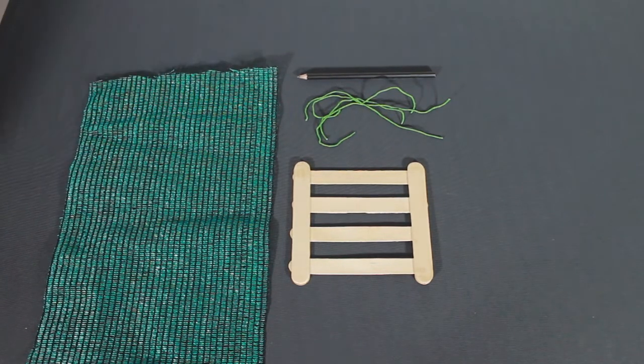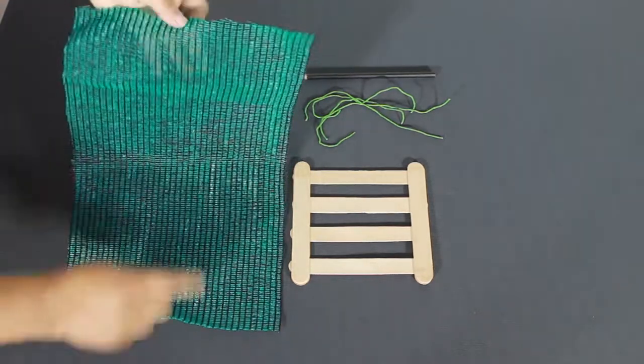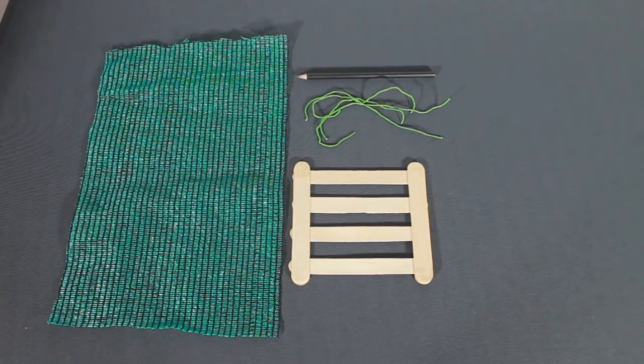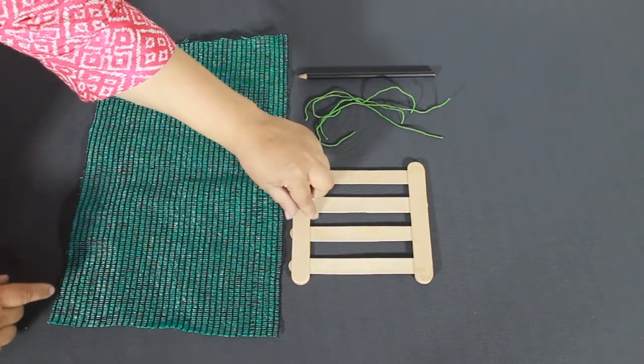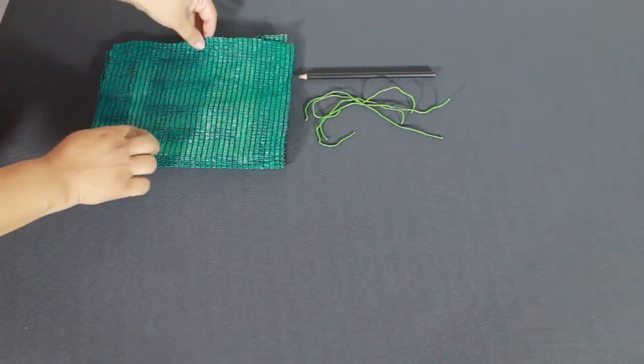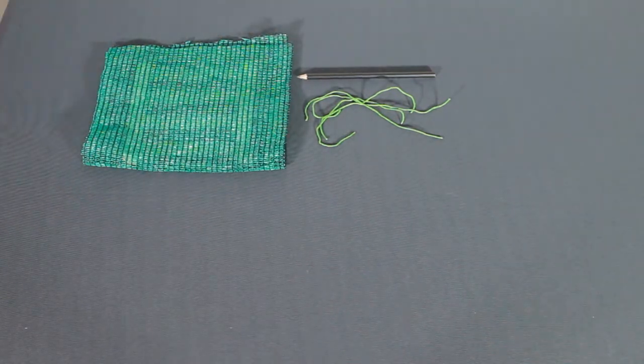It's time now to add the net. Place the frame on the net ensuring even space on all sides. Fold the net and cut extra net if any. Place the frame on the double-layered net.